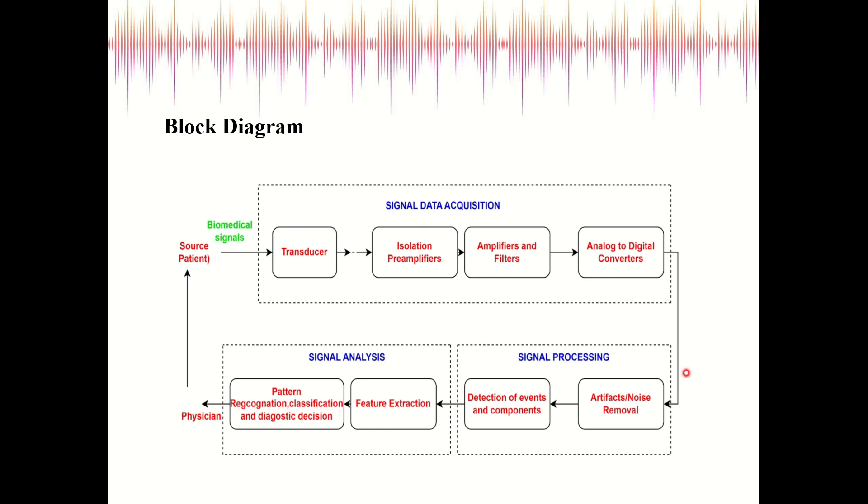The signal data acquisition is followed by signal processing. The first block is the artifacts and noise removal. The biomedical signals have different types of noises present, so this block will help in removing or filtering the noises. The next block is the detection of events and components. Here we will be talking about the events present in the biomedical signals and how we can detect those events.